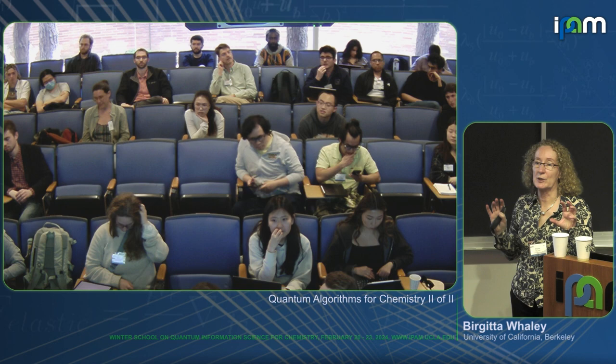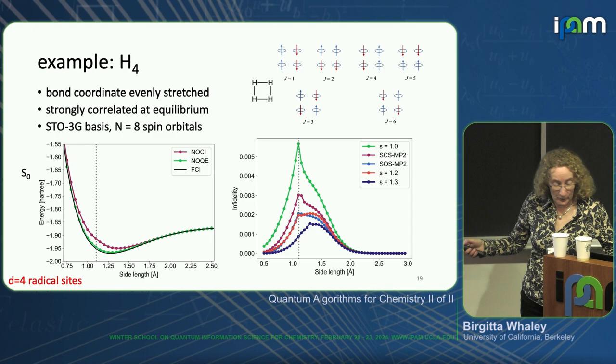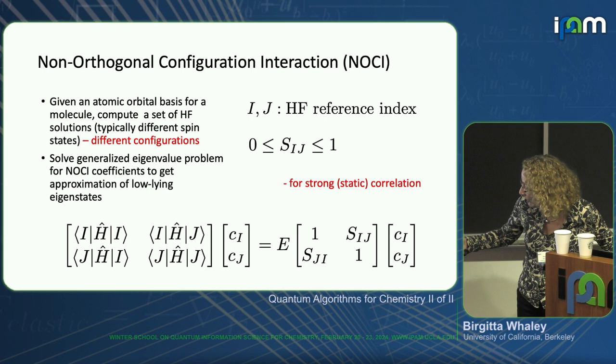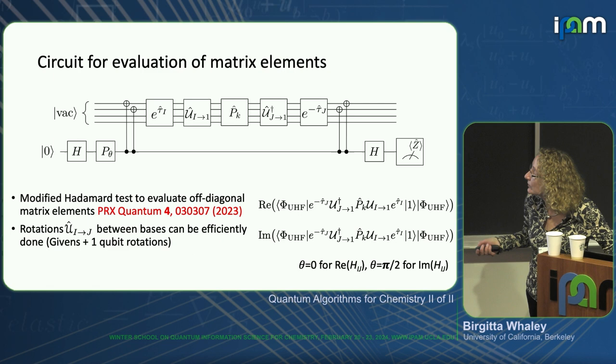For this multi-reference system, we do MP2 on each reference separately, so there's no degeneracy causing divergence. The idea is to bring in references which are distinct from each other — you definitely don't want to combine them together. If you have linear dependence between these states, you won't do well solving the generalized eigenvalue problem, so you want the reference states to be as distinct as possible before adding the weak correlations on top.